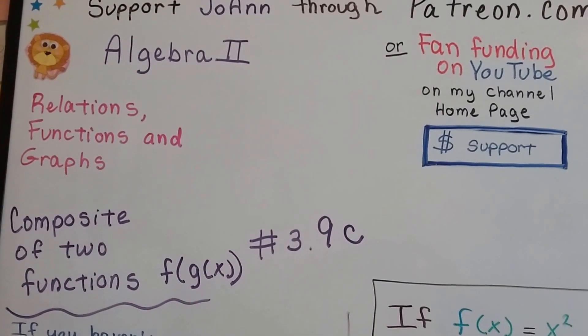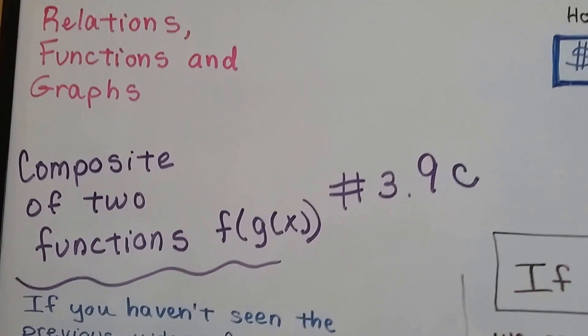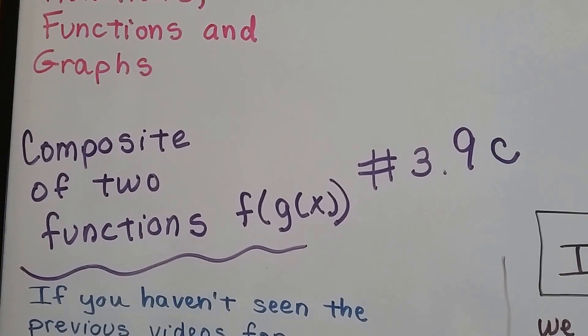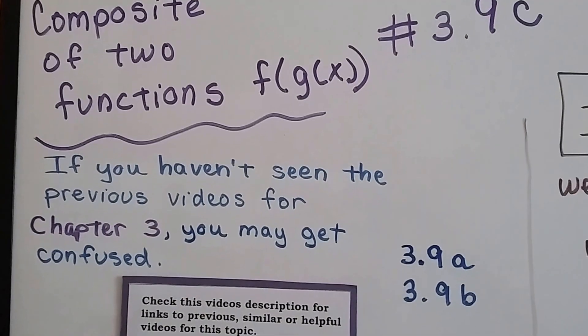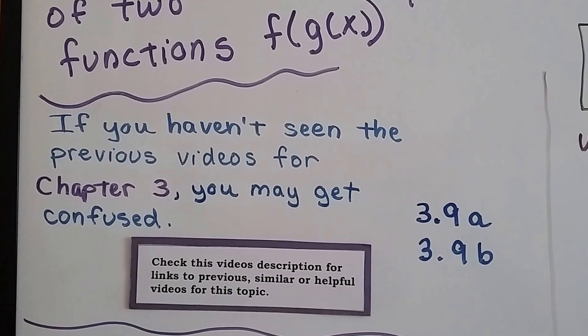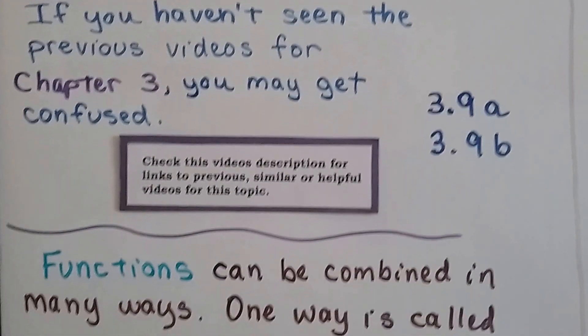Algebra 2, 3.9c, composite of two functions. So we're going to be doing a composite of two functions like the function of g of x. If you haven't seen the previous two videos, 3.9a or 3.9b, you can just click on this video's description to watch those so you don't get confused.